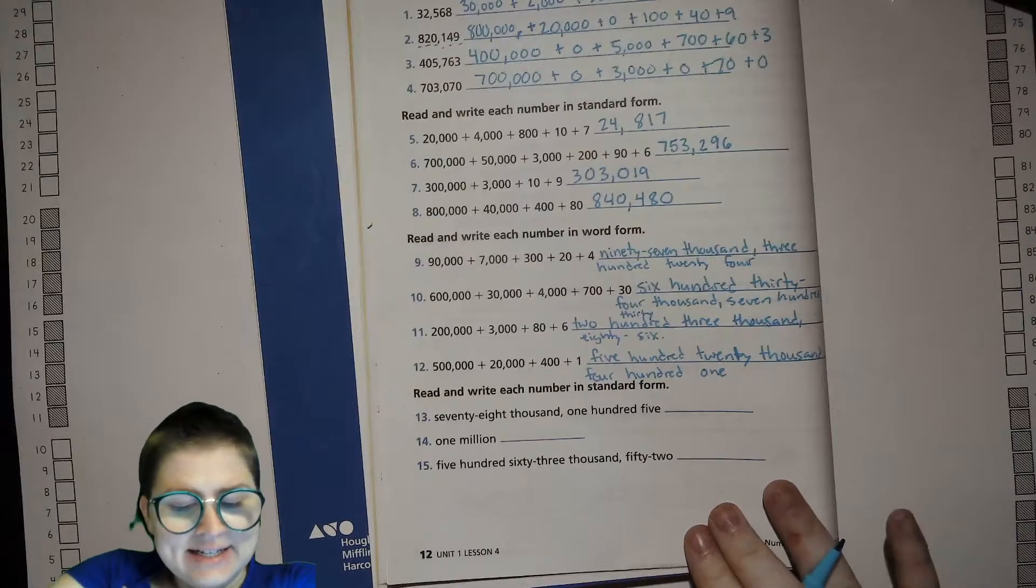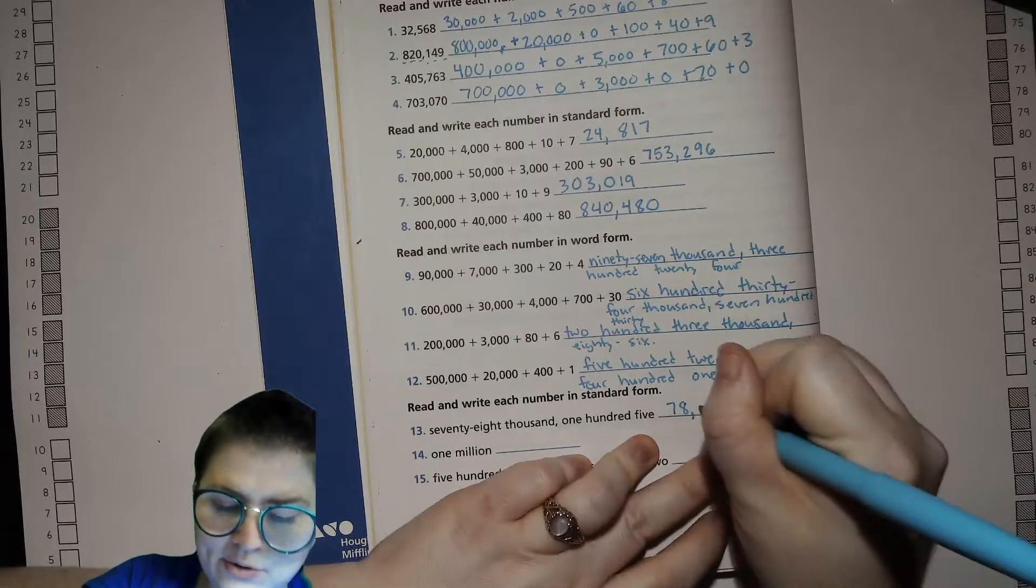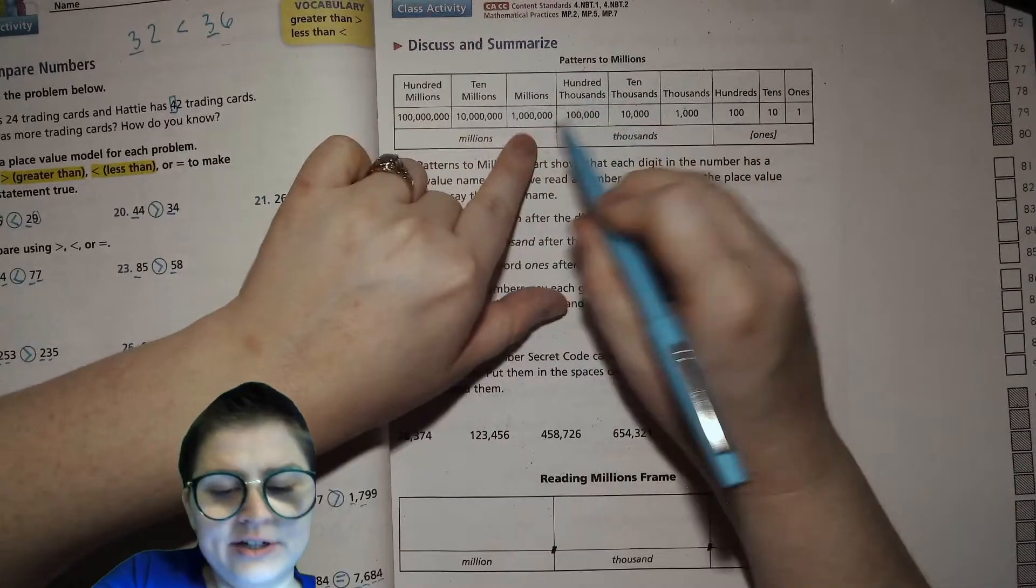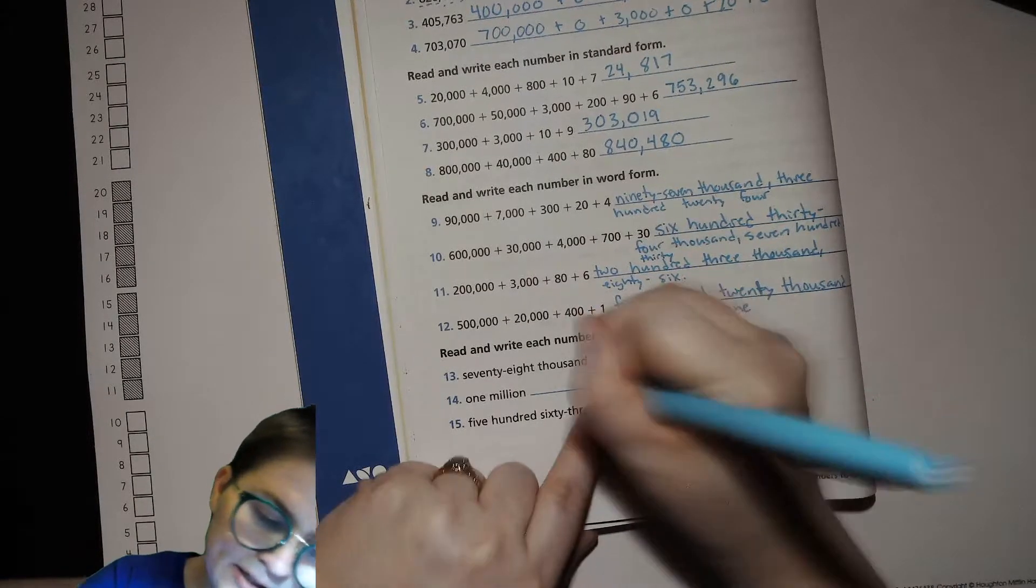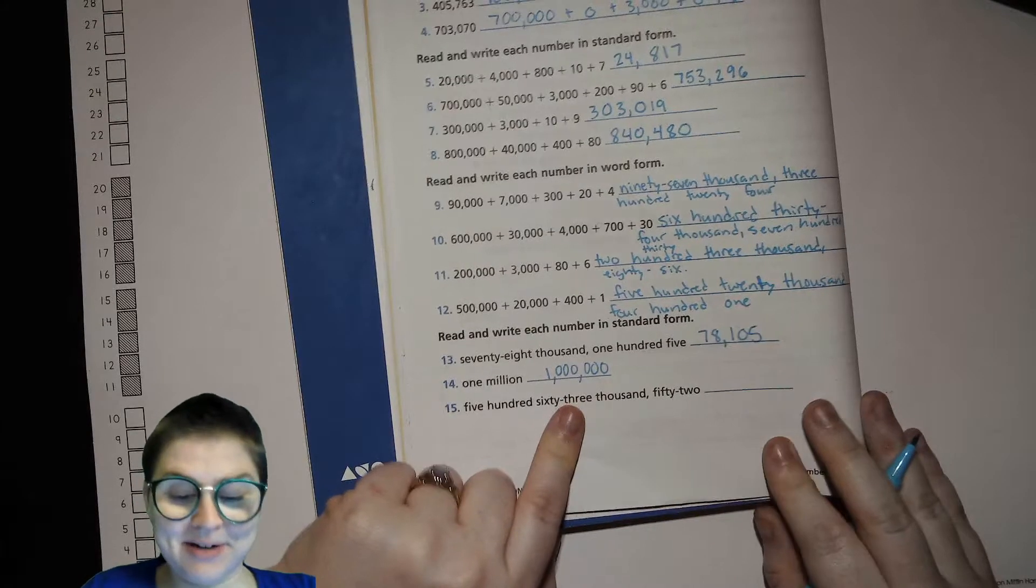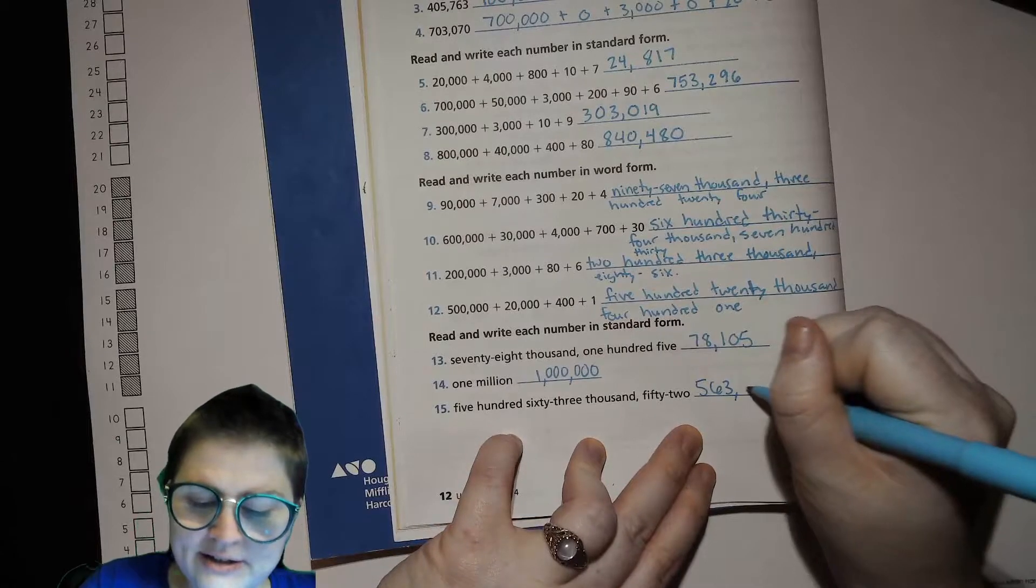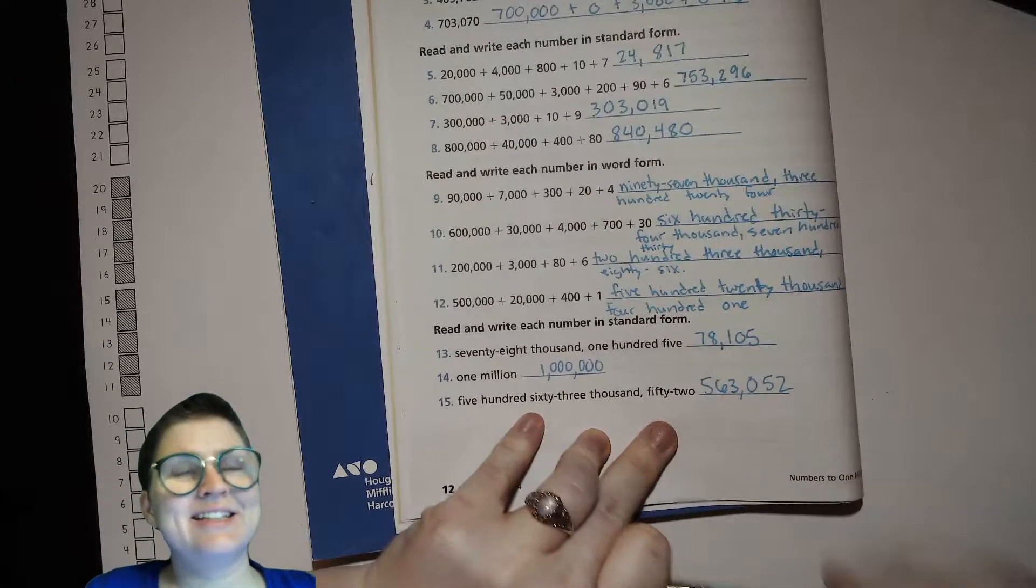Seventy-eight thousand one hundred five, so we just write that out as we heard it: seventy-eight thousand one hundred five. One million. Now I don't think we talked about it before, but after each three place value places we do a comma, so the millions begins after the second comma. That means there's six zeros starting from the decimal: one, two, three, four, five, six, comma one. That's how I always write my million because I don't want to have the wrong number of zeros in there. 563,052: five hundred sixty-three thousand, no hundreds, fifty-two. There's a Think Central activity to do today, and I'll see you next time. Bye everybody.